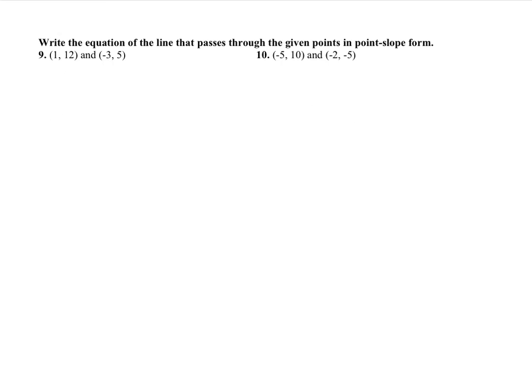What if you're asked to write an equation where you're only given two ordered pairs? This is similar to question 4 at the top. We can use point-slope form — we need a point and a slope. For number 9, we have two points, so we find the slope using the slope formula: (12 minus 5) over (1 minus negative 3), which is 7 over 4. So the slope is 7 fourths.